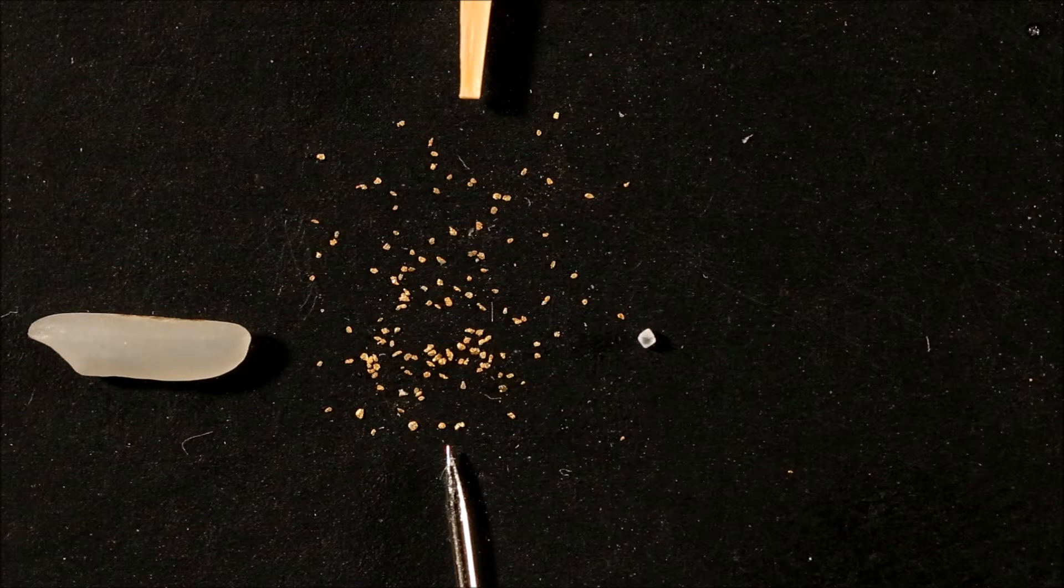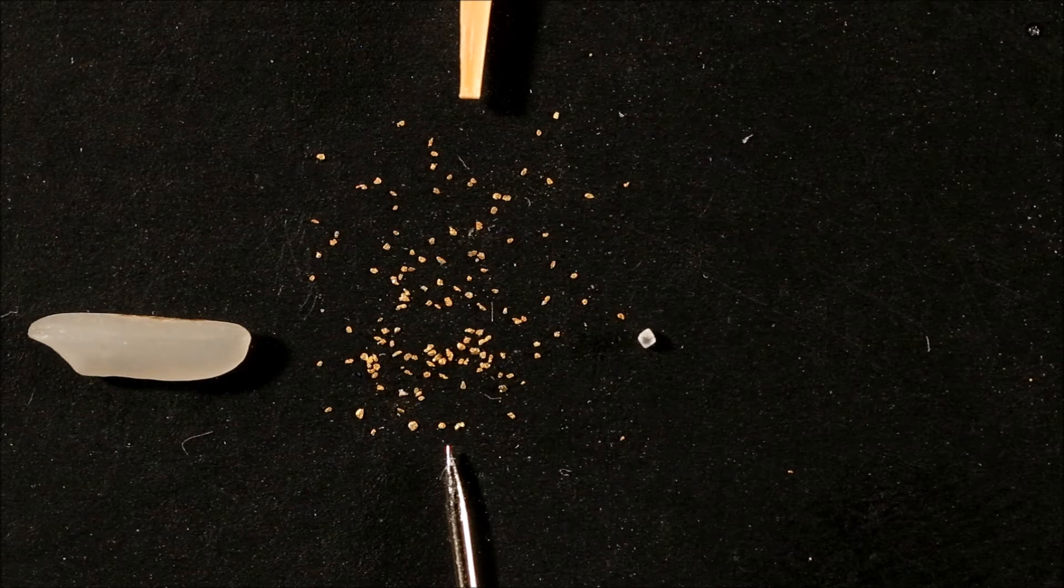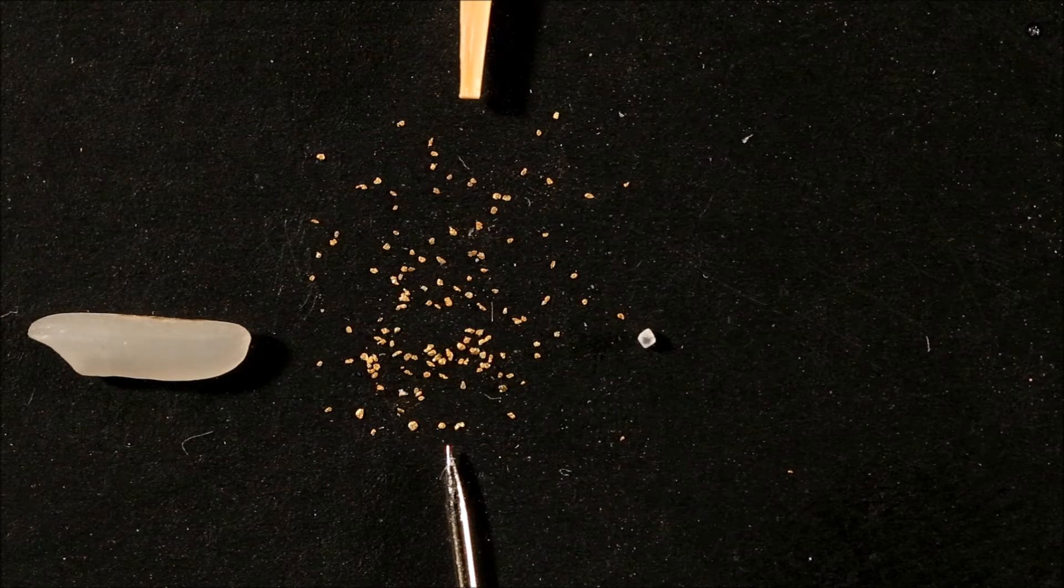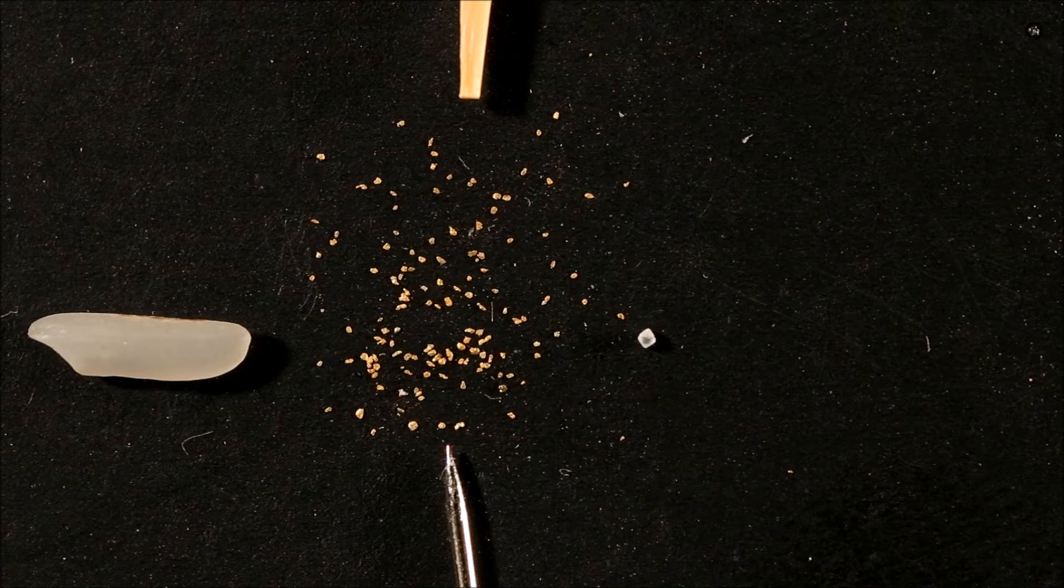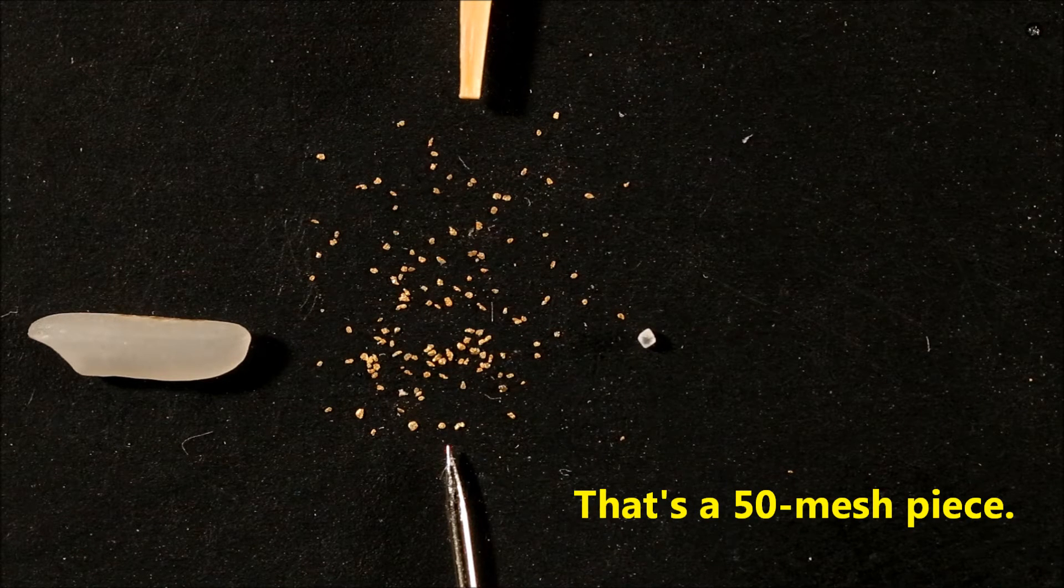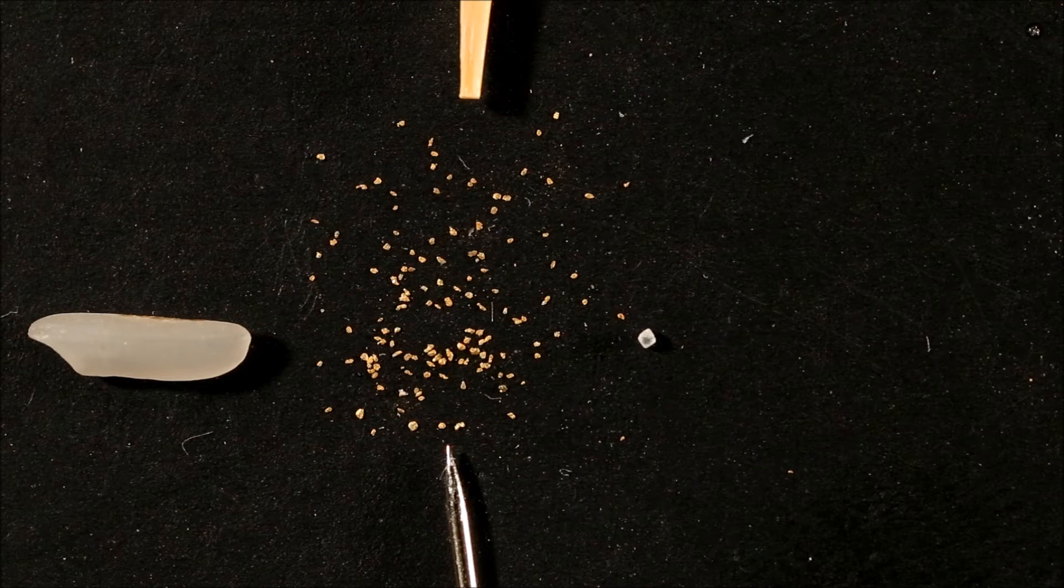The U.S. Department of Agriculture, don't ask me why agriculture, defines it as anything less than half a millimeter in diameter. And it takes about 40,000 bits that small to equal a single troy ounce.